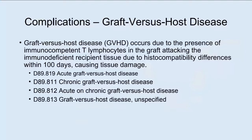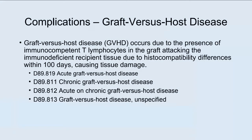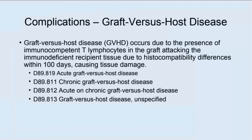Graft-versus-host disease may be documented as acute, chronic, acute-on-chronic, or unspecified. Acute-on-chronic means the patient had a chronic form of this condition but then has a flare-up, making it also acute. You can see from the sixth digit which of these it is. Immunocompetent T lymphocytes in the graft attack the recipient tissue within 100 days, causing tissue damage.